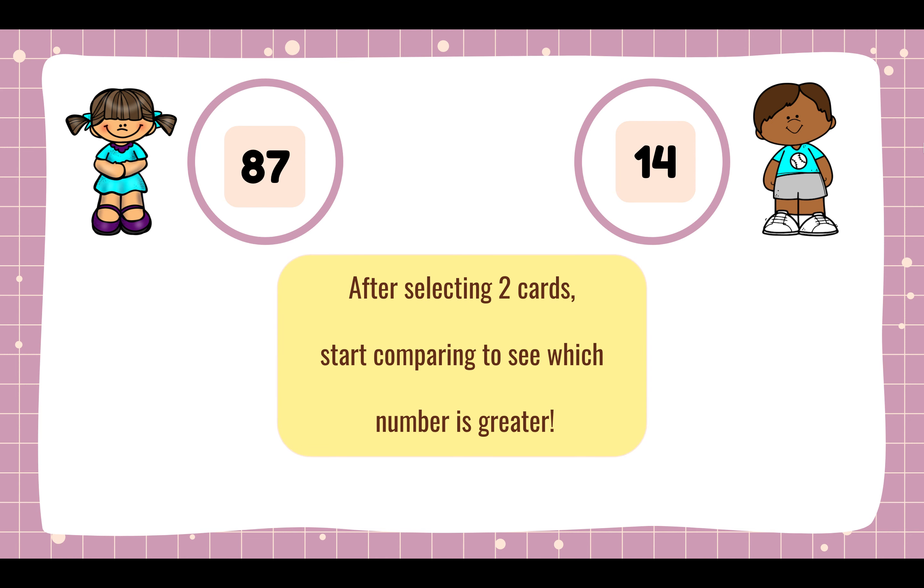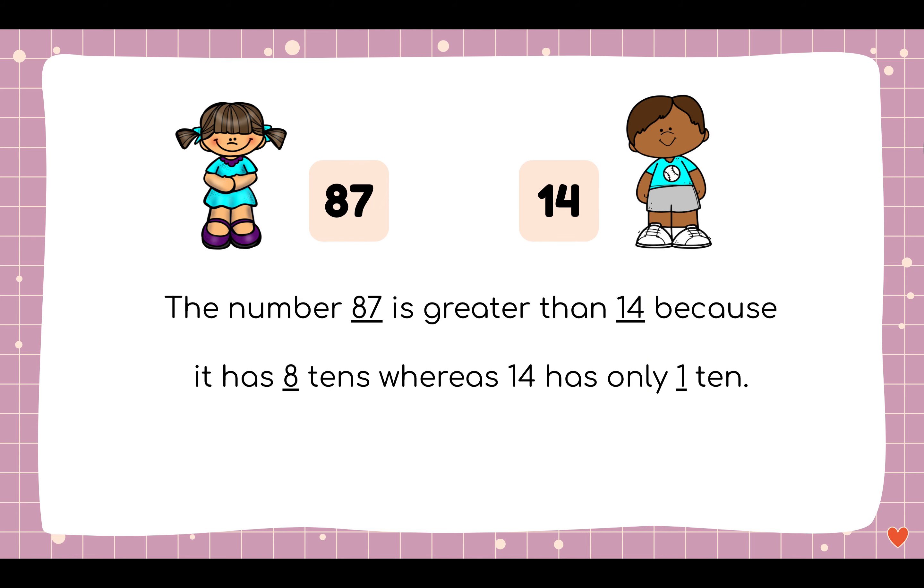After selecting two cards, start comparing to see which number is greater. Right now you can see the little girl has 87 and the boy has 14. The number 87 is greater than 14 because it has 8 tens, whereas 14 only has 1 ten. So this little girl has the greater card, and she gets to keep both cards.